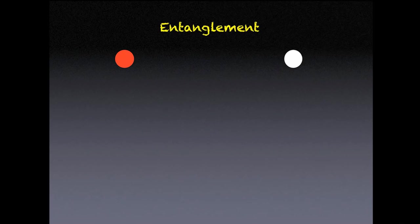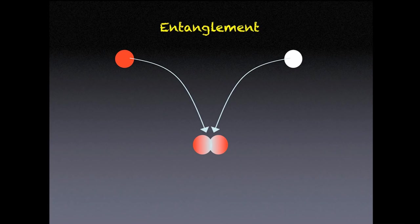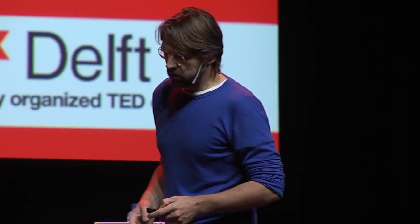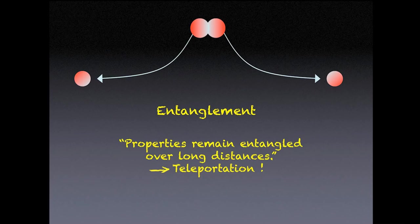The next example is entanglement. We start very simple — we take a red particle and a white particle. Then we bring them together and make them interact a little bit, bringing them very close together so they feel each other. By virtue of this interaction, they become entangled — they take over each other's properties, so in terms of color they become white-reddish. The curious thing happens if we entangle them and then bring them apart. While taking them apart, they remain entangled. The one on the left still has some properties of the other particle, which can be at a very large distance — as far as the size of the universe, in principle.